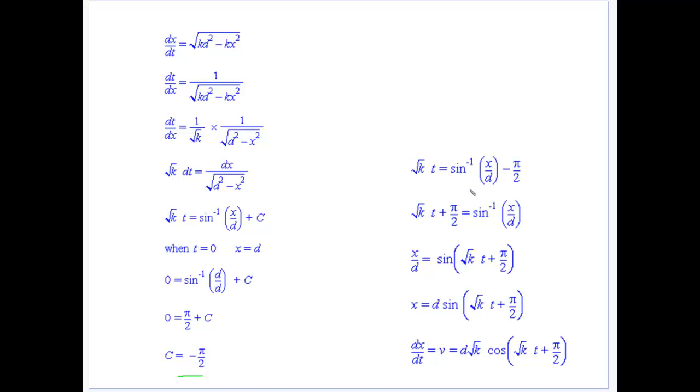So there's our expression. We want x in terms of t, so then we can do a little manipulation. So we add our π/2 across there and then take the sine of both sides. Divide by d to get x in terms of t there. And then to get v in terms of t, we derive both sides. So dx/dt, which is equal to v. And we derive this one, we get d√k cos of √kt plus π/2.